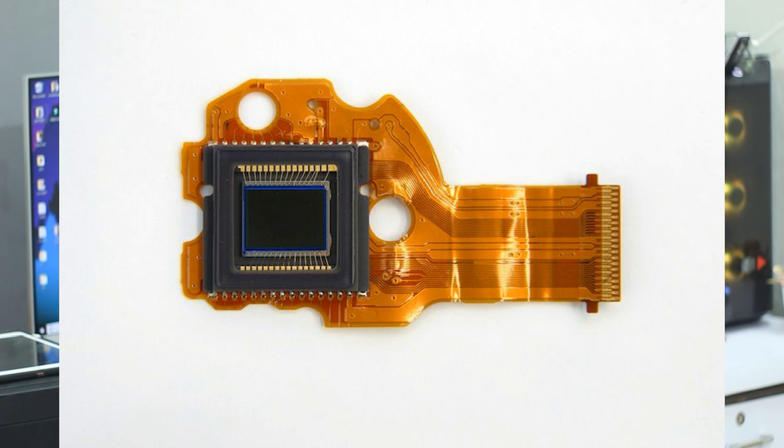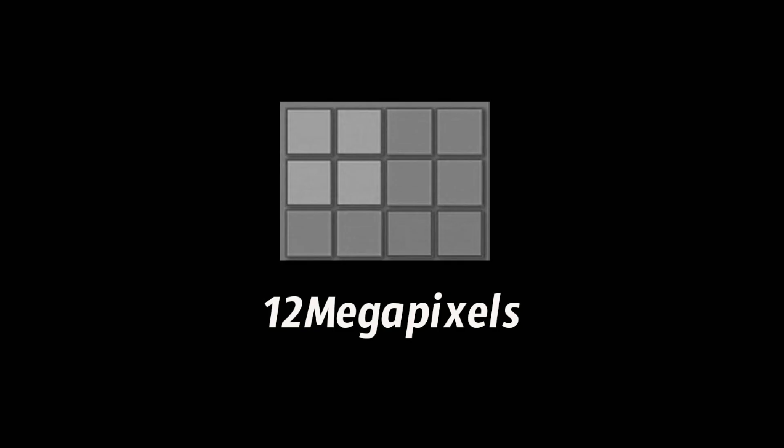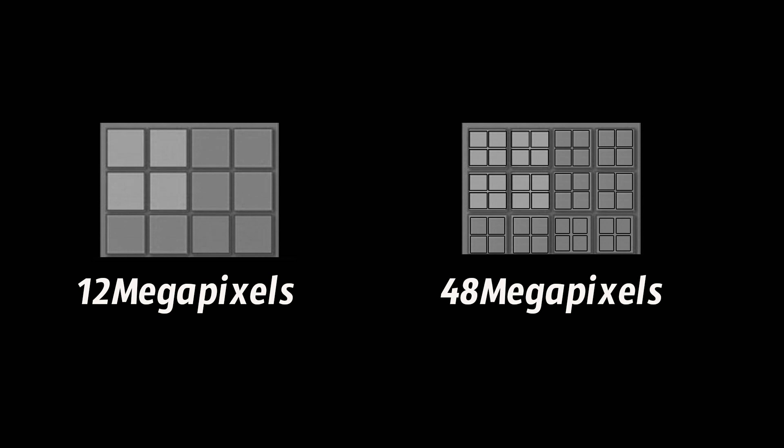Now let's understand the differences. We have phones with 12MP and 48MP sensors. The sensor size is the same, but in a 12MP sensor you have fewer, larger pixel boxes, while in a 48MP sensor you have more, smaller pixel boxes fitted into the same area. So when we have a 48MP camera with the same sensor size, the pixel size becomes smaller compared to a 12MP camera.